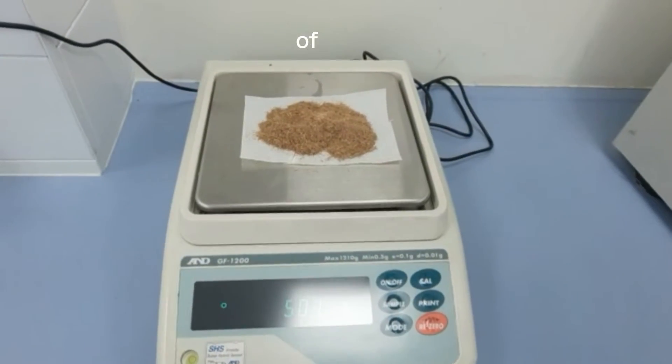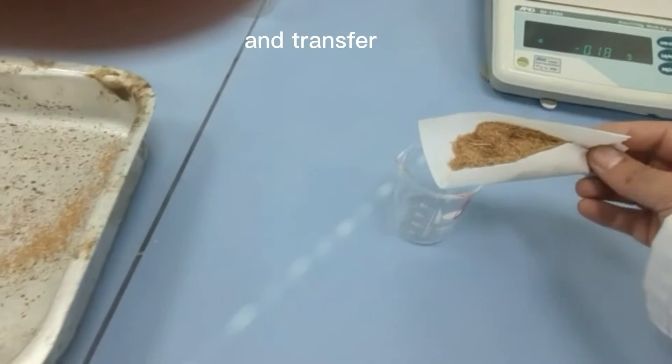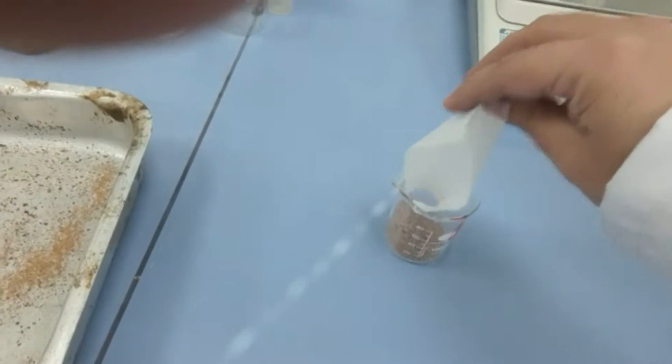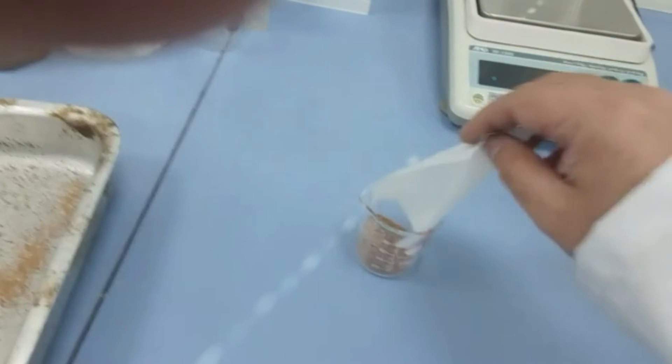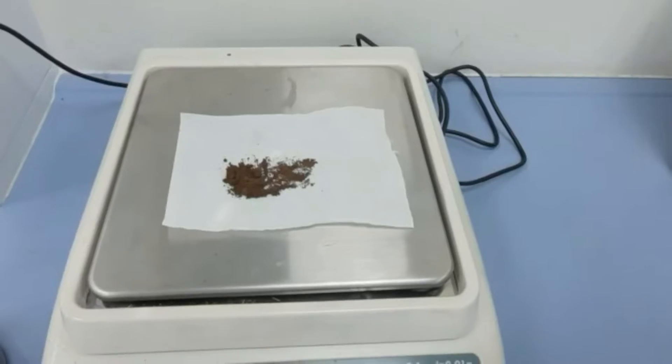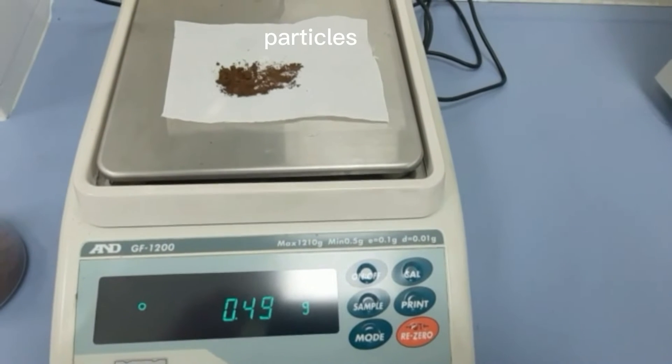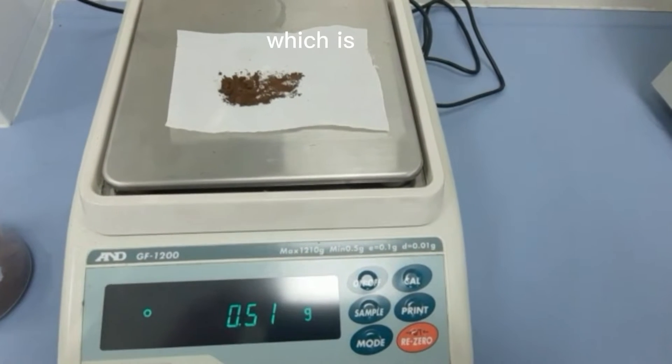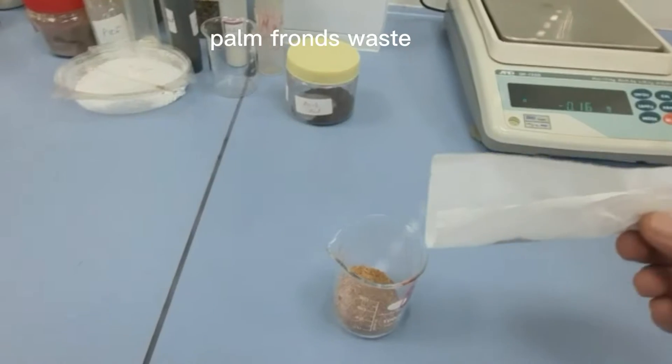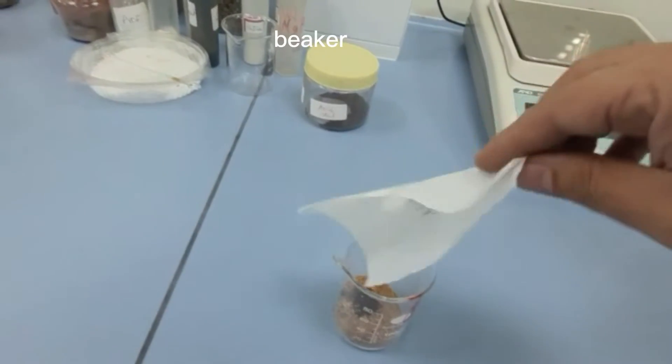Now weigh 5 grams of date palm and transfer into a beaker. The second step is to weigh 0.5 grams of magnetic particles, which is about 10% of date palm. Transfer the magnetic particles into the same beaker.